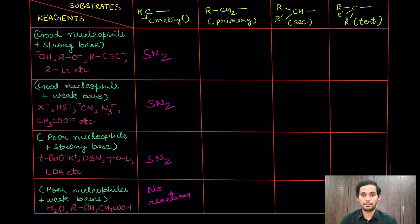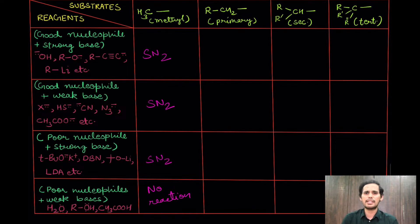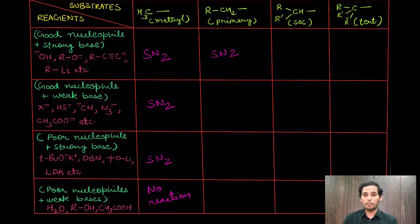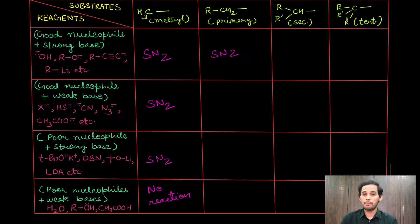Now let us move to primary substrates other than methyl. Unlike methyl, they have a beta carbon, so chances of elimination — including E2 — exist. For a good nucleophile and strong base on a primary substrate, the competition is between SN2 and E2. Since steric hindrance is least after methyl, there is a dominant tendency to do SN2, although E2 is also possible depending on the reagent used and the temperature. Higher temperature favors E2; lower temperature favors SN2.